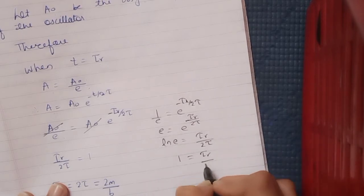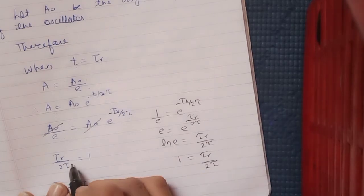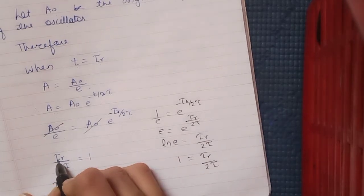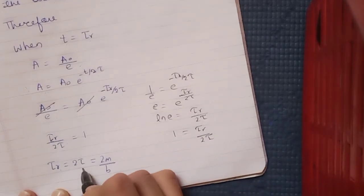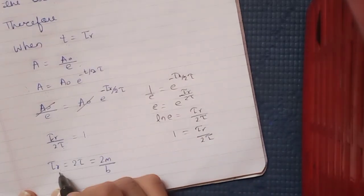= τᵣ/2τ. This is what I have written here: τᵣ/2τ = 1. So τᵣ = 2τ by cross multiplication.